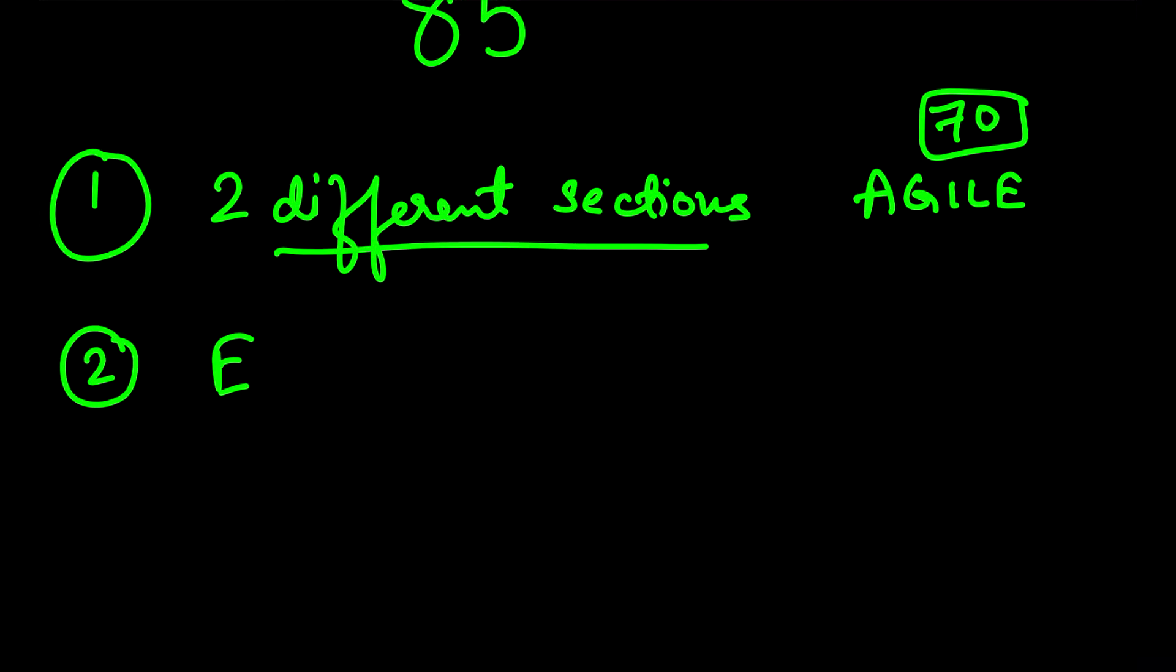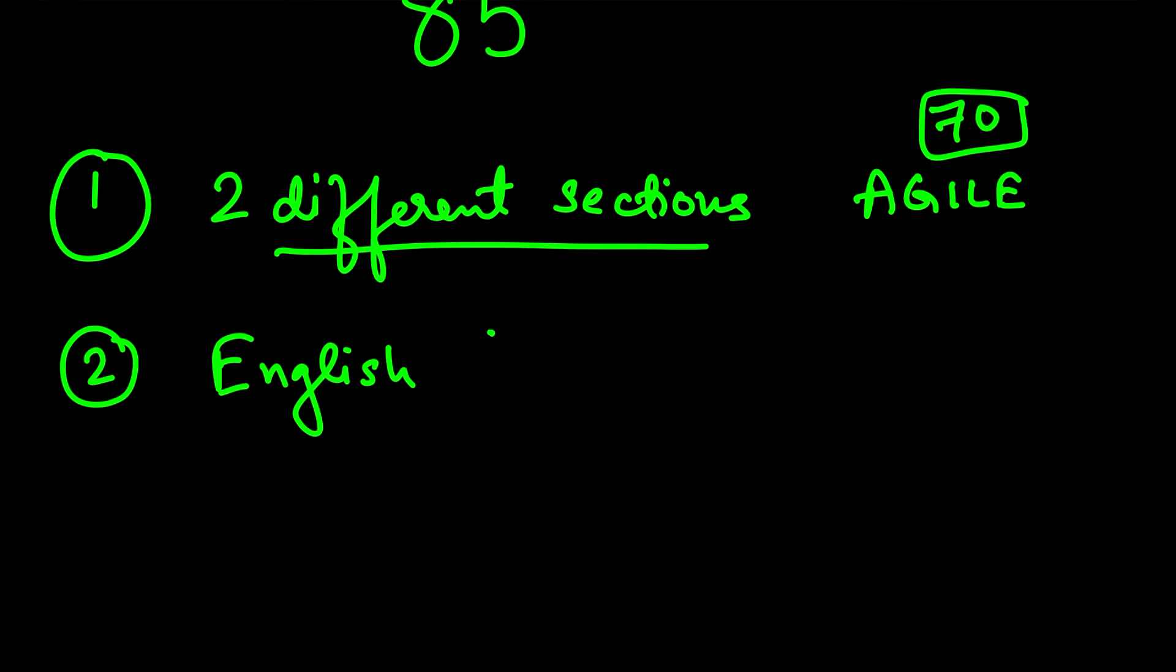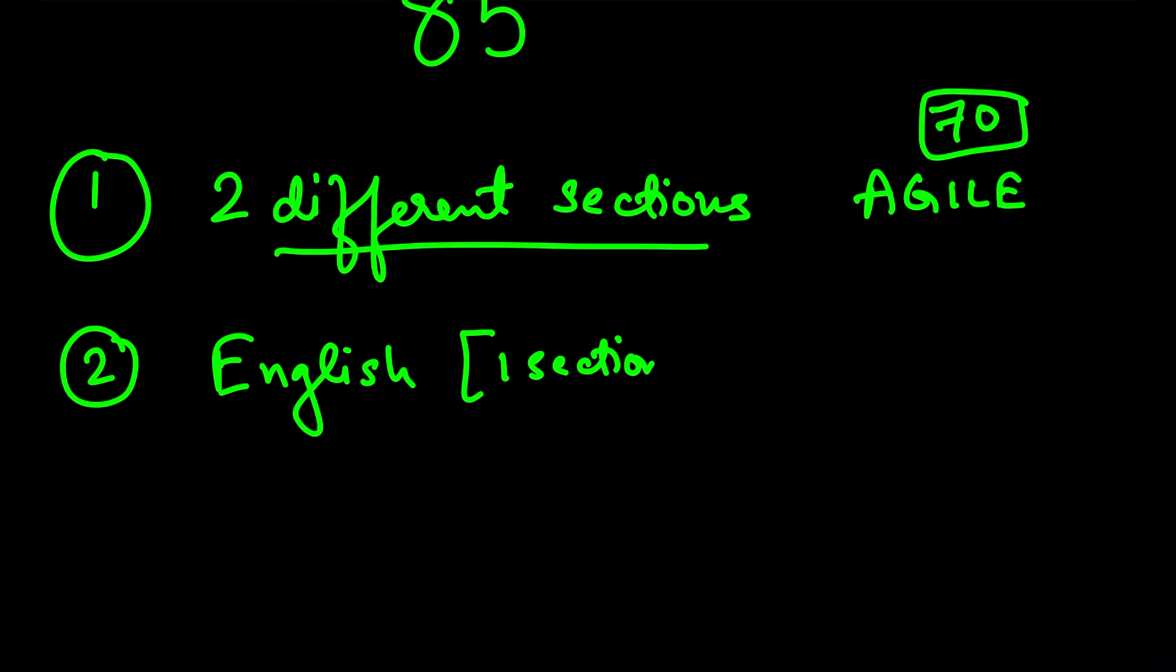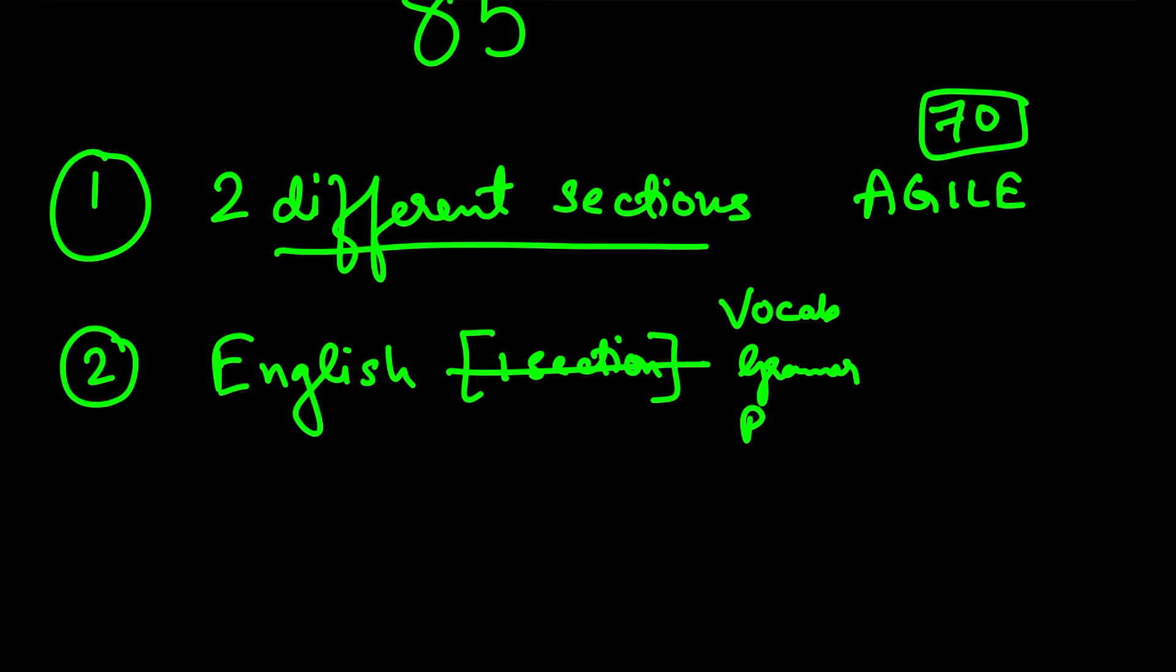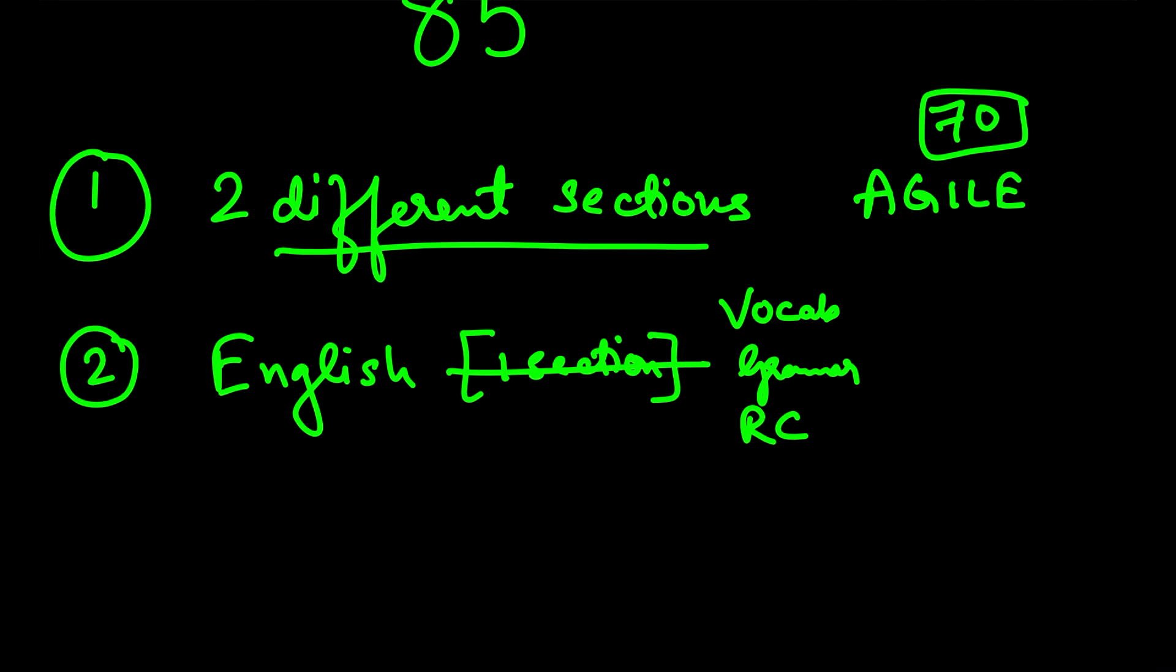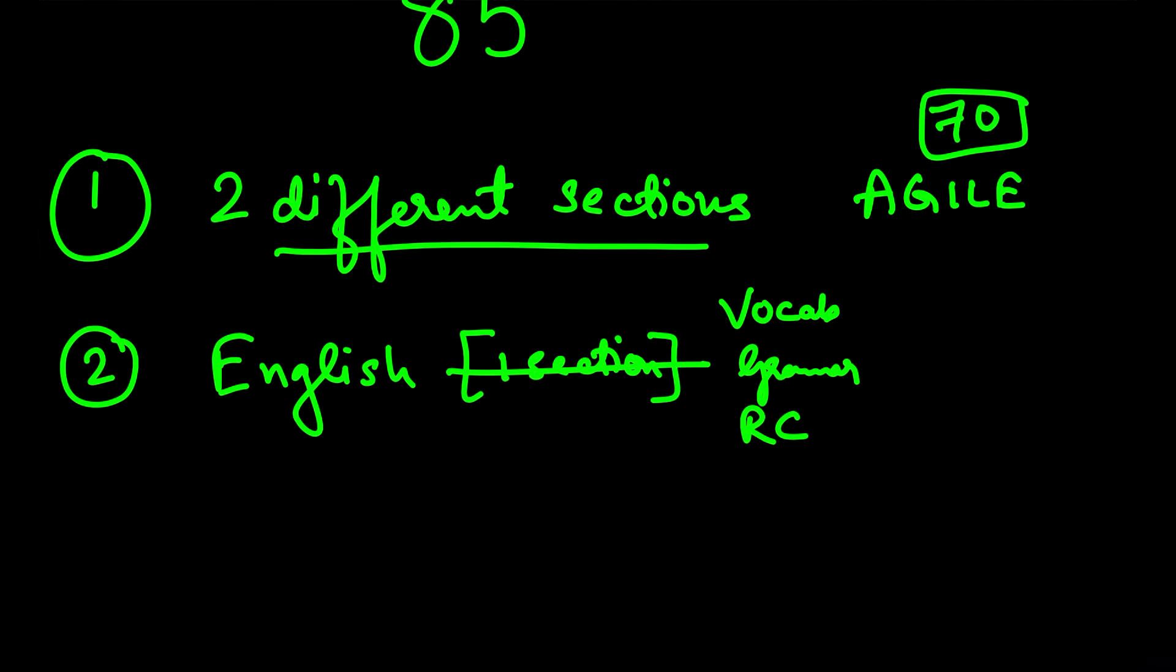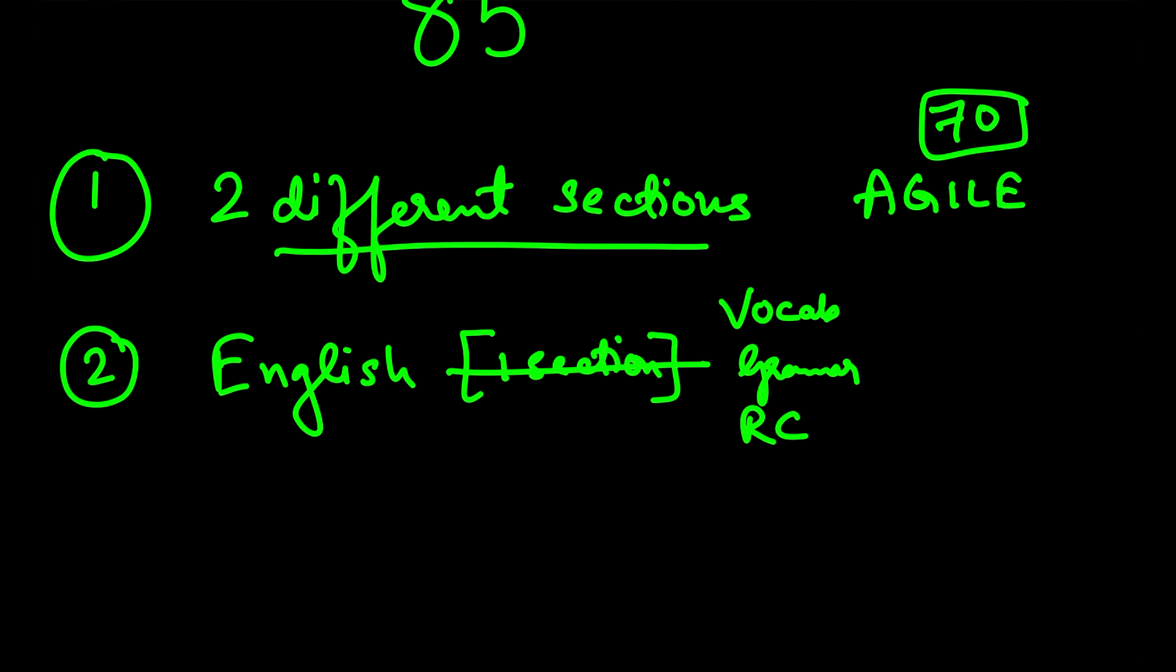The second crazy fact which you need to keep in mind is English. Remember that English is not only one section, it's three sections. Because the questions of DILR and quants are also written in English. And when I ask you to practice English every day, it's not just to improve your vocab, your grammar, or your reading comprehension skills, but it's more about understanding, communicating.